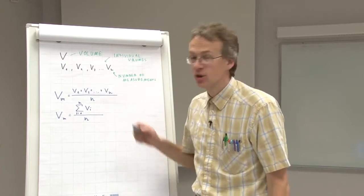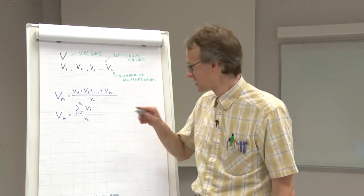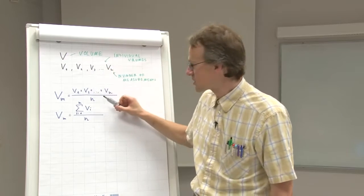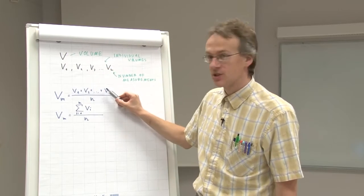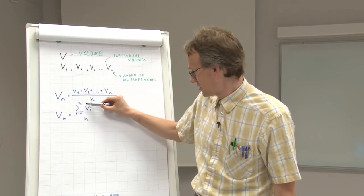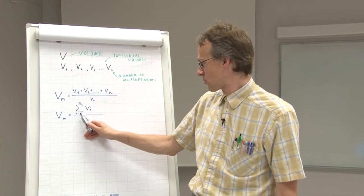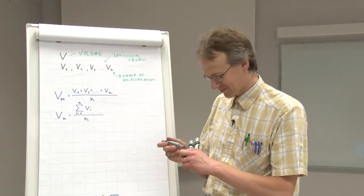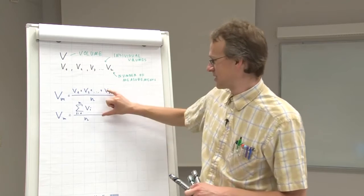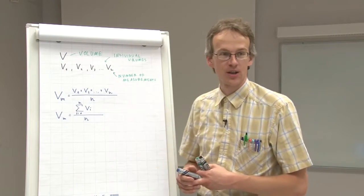Here we denote by the sigma sign the sum of all these volumes. Each individual volume is denoted by Vi and i changes from 1 to n. So these two equations are equivalent.